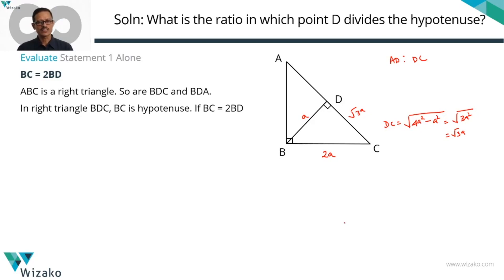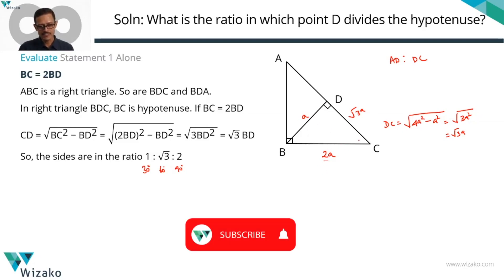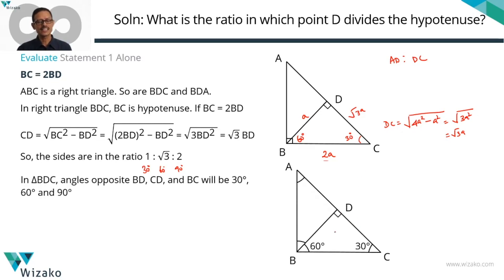Now, the ratio of the sides is 1 is to root 3 is to 2. The ratio of the sides of BDC is 1 is to root 3 is to 2. 1 is to root 3 is to 2 is a special property right triangle, where the angle opposite to 1 is going to be 30 degrees, angle opposite to root 3 is 60 degrees, and the angle opposite to 2 is the right angle, 90.